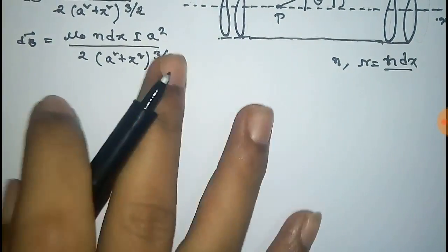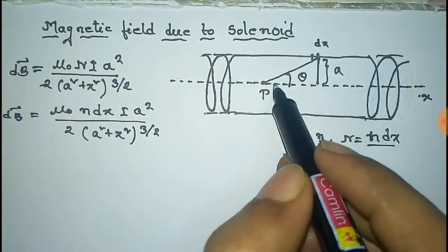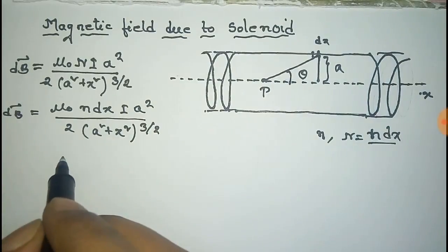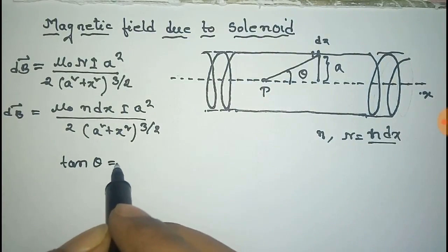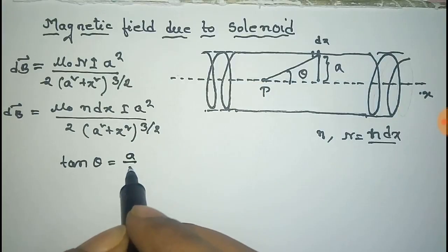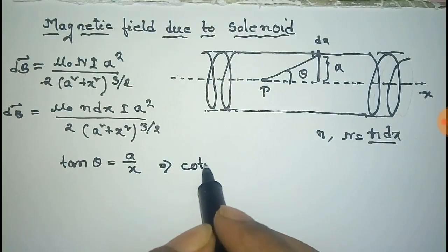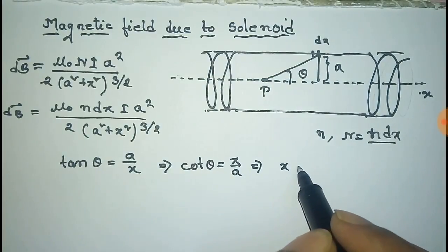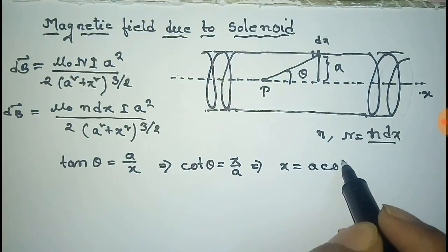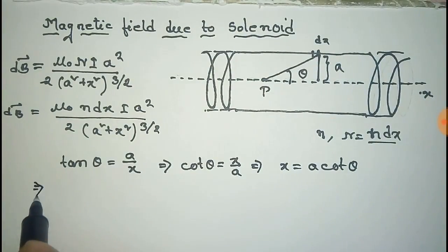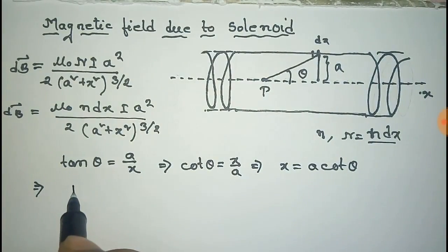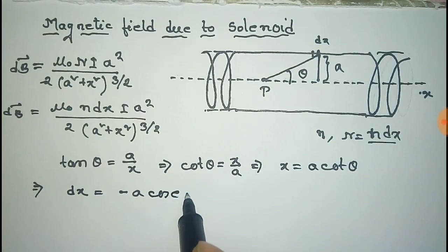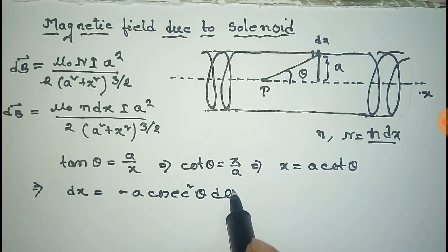From the diagram we can see that tan theta equals a over x. So tan theta is equal to a/x. From this, cot theta equals x/a, and therefore x equals a·cot theta.